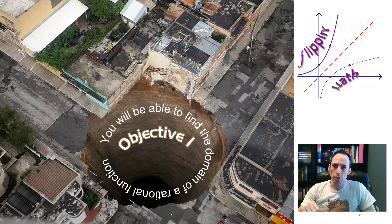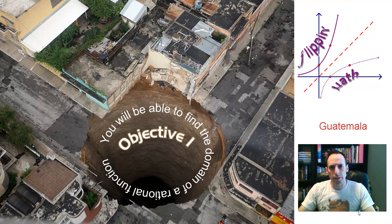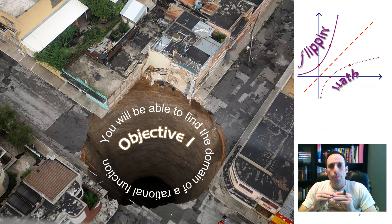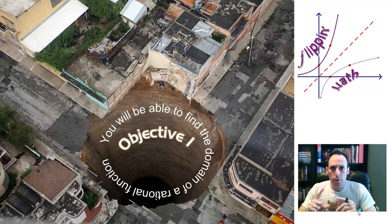So here's our first objective. You're going to be able to find the domain of a rational function. And in this, there's a huge sinkhole in some place — I hope it's not your house. It's often said on the internet that whenever you divide by zero, you create a black hole in time and space. And that's what this image is representing — whenever we divide by zero.